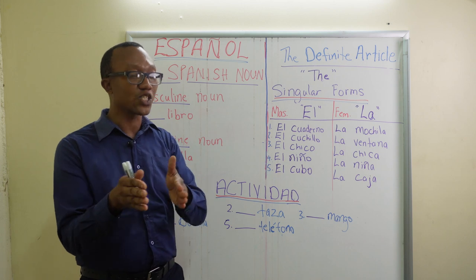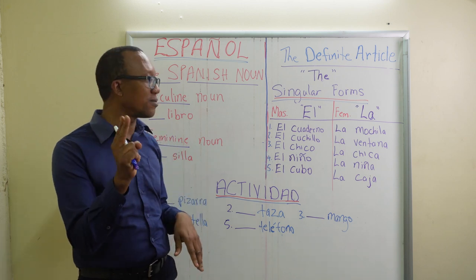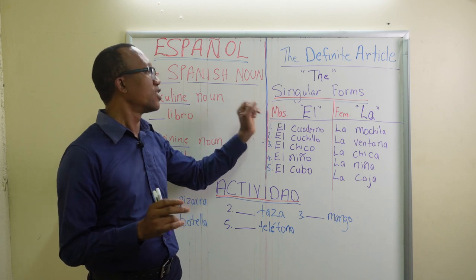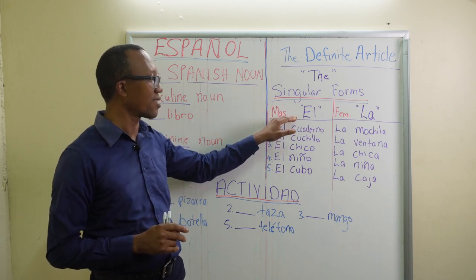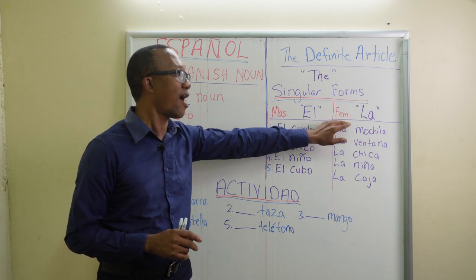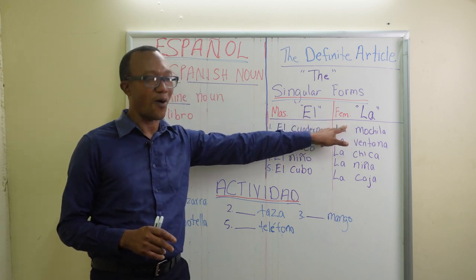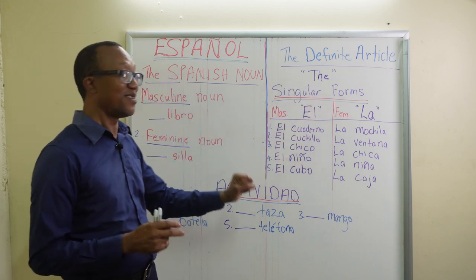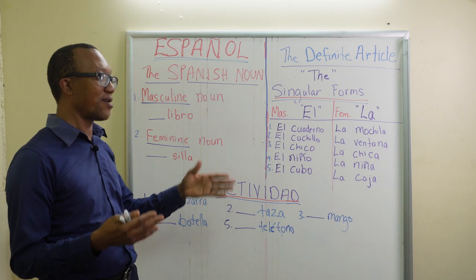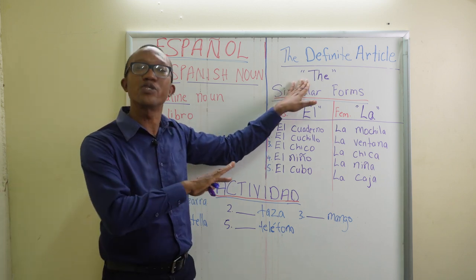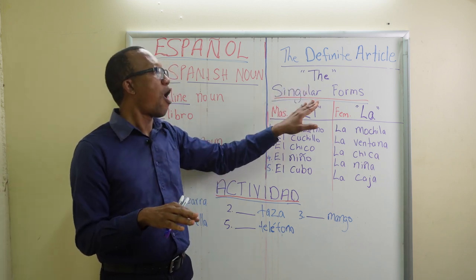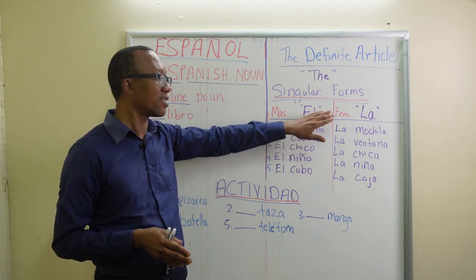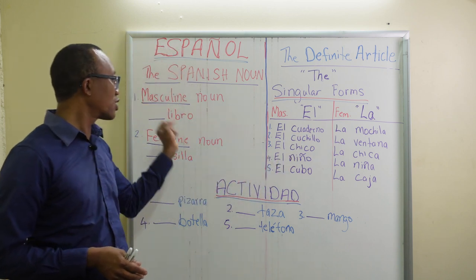In Spanish, unlike English, there are two forms in the singular. We have 'el' as the masculine form and 'la' as the feminine form. Both mean 'the.' In English you only have 'the' that goes with any noun; however, in Spanish you have to know the gender to use 'el' or 'la' correctly.